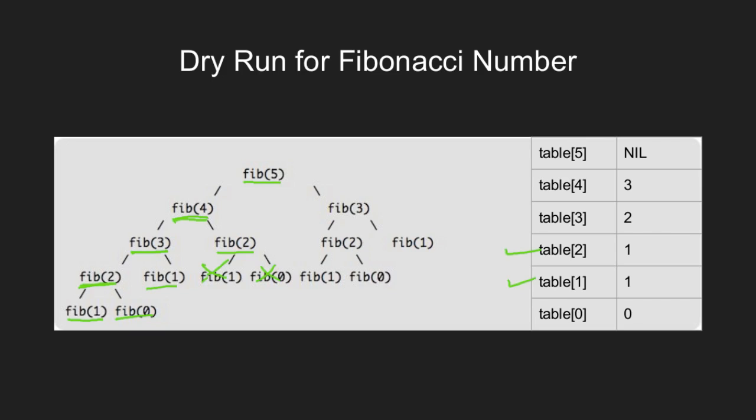Next, ctrl moves up to fib5, which now calls fib3. Since table 3 is not nil, fib3 simply returns table 3. And finally, fib5 updates table 5. And thus we see memoization helped us avoid re-computing this entire subtree.